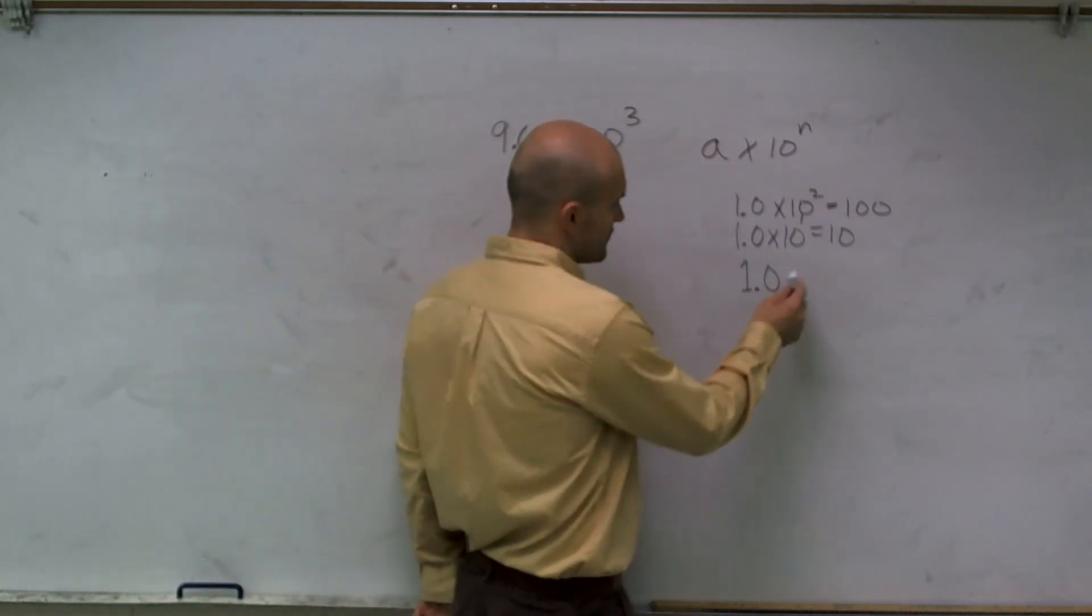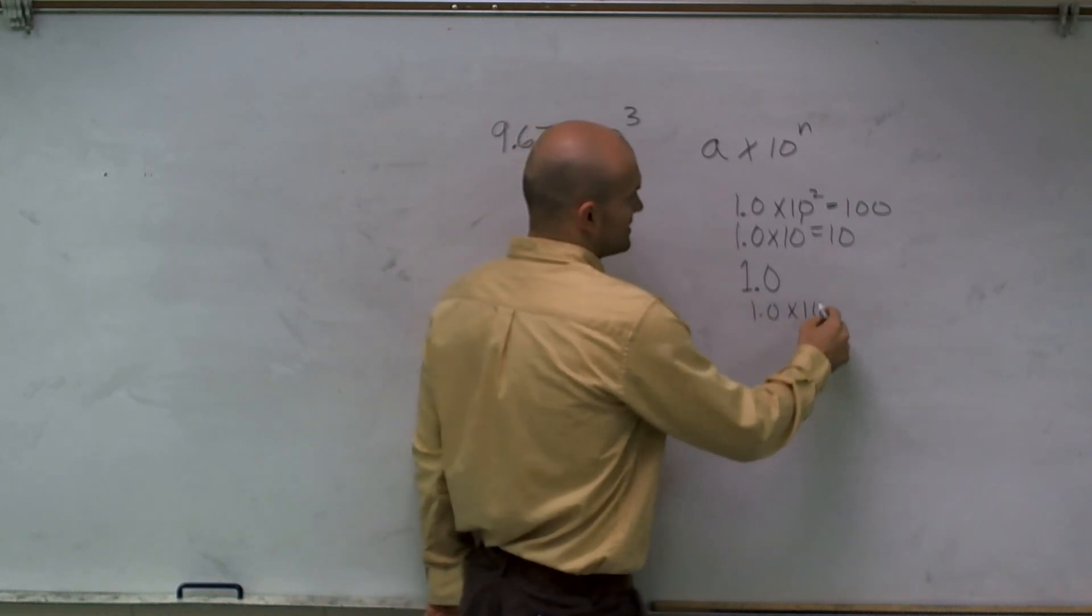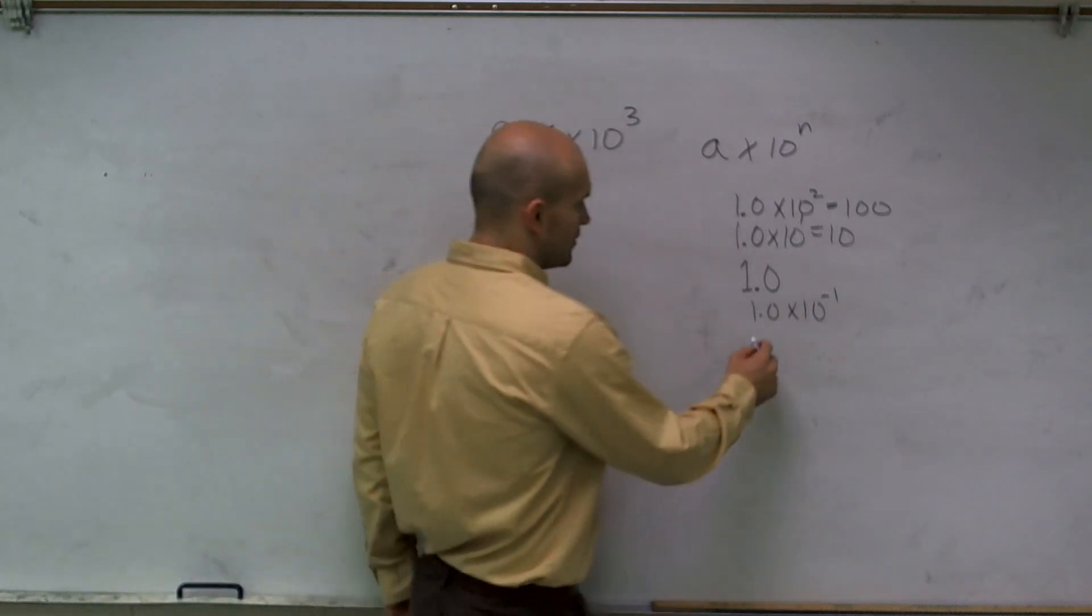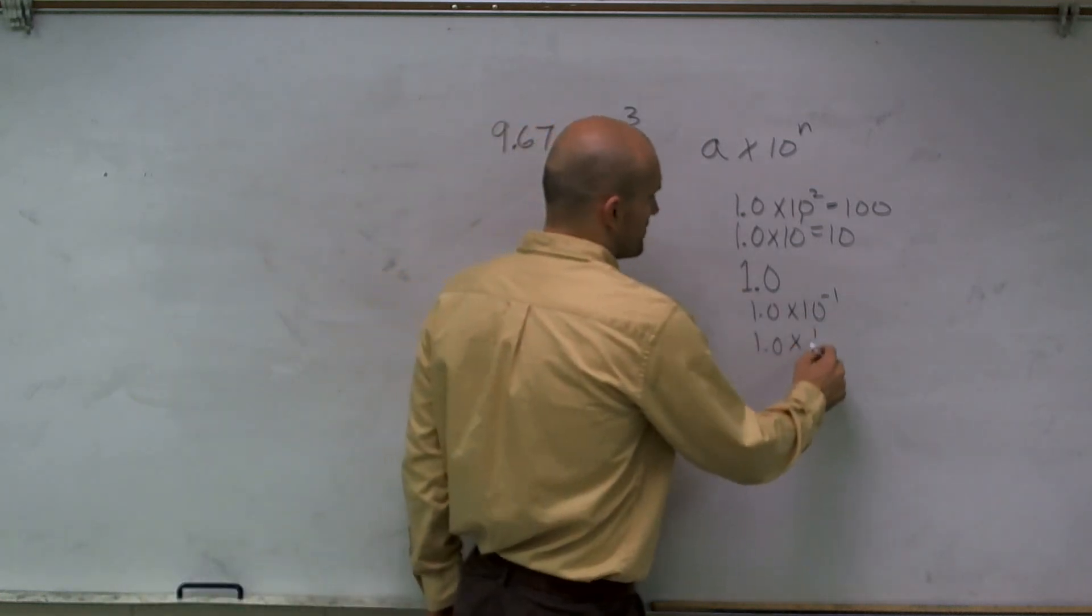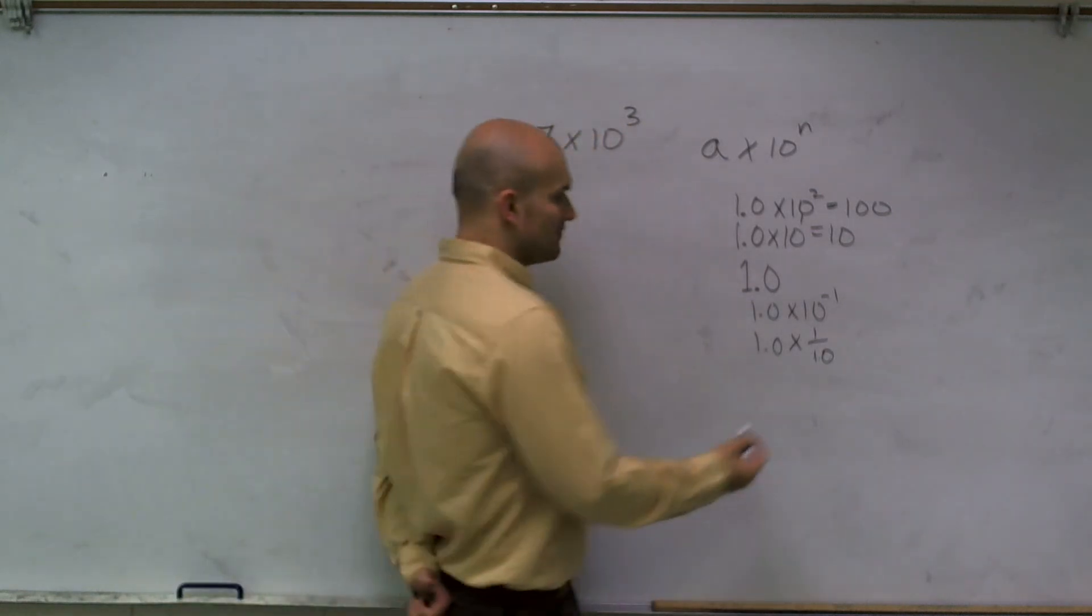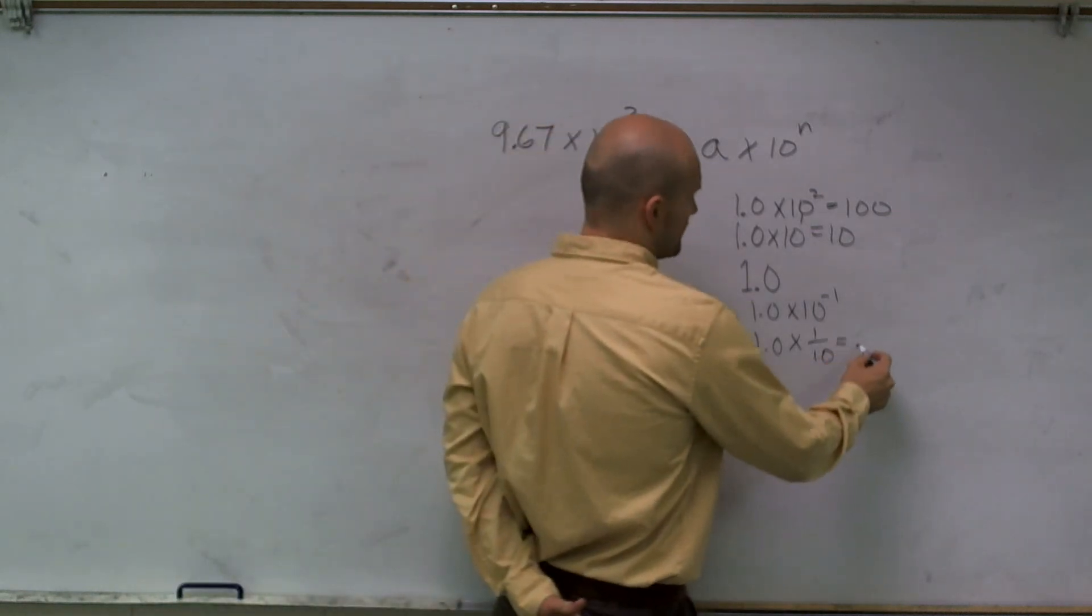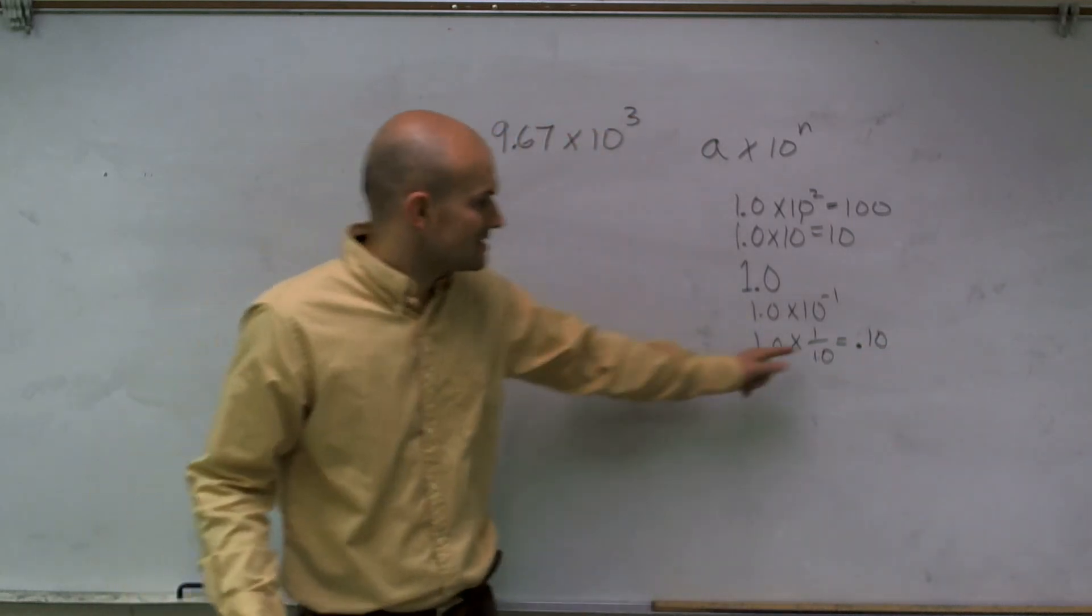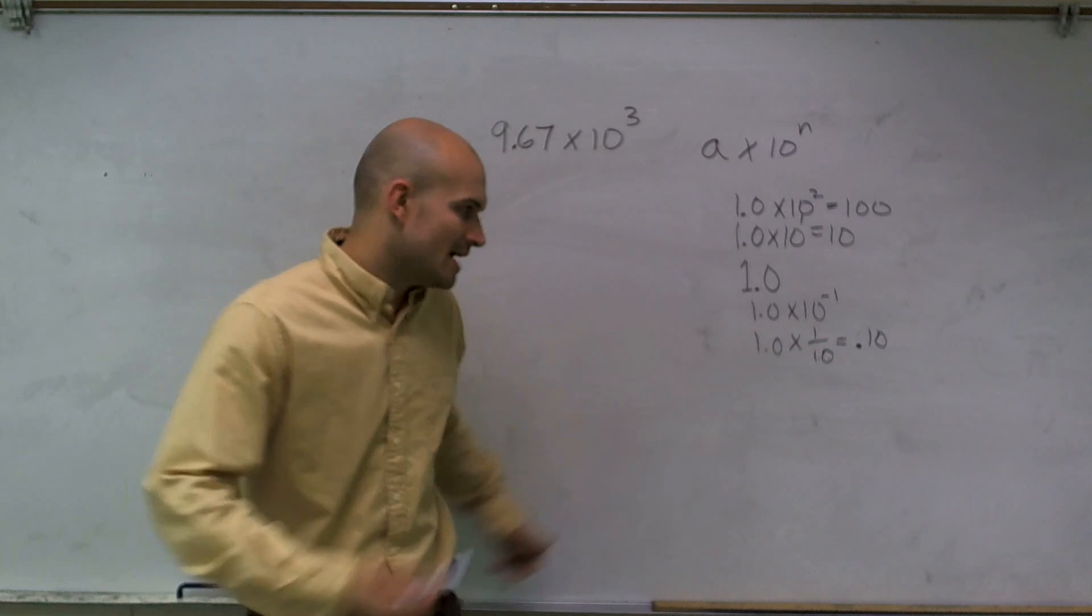Let's take a look if the exponent is negative. So if I have 1.0 times 10 to the negative first power, well, that's the same thing as taking 1.0 and multiplying it by 1 over 10, which would be like dividing by 10. And therefore, that's going to give me an answer of 0.10. And so what that is like is like taking this decimal and moving it to the left.